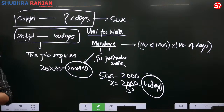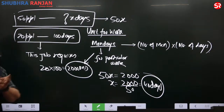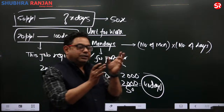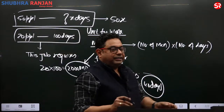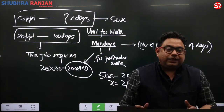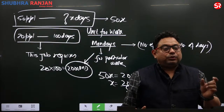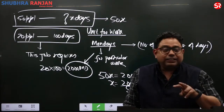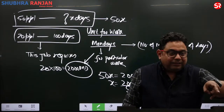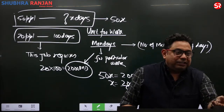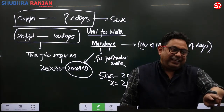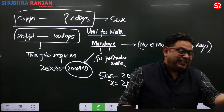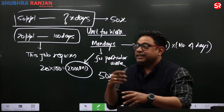Man days is a constant quantity. Whenever there is a specific work, the total amount of work is called man days and it is constant. Once we know 2000 units are required, I can change the number of men and the number of days would automatically change, or I can change days and men would automatically change.